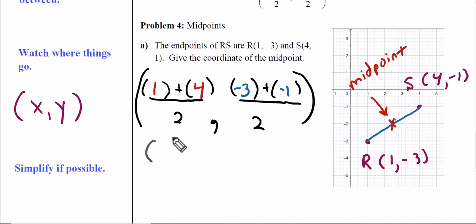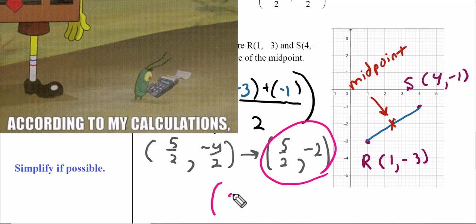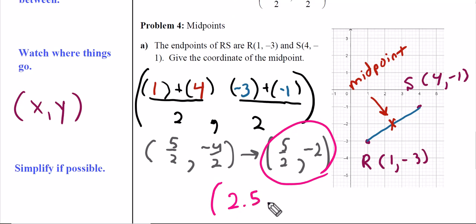If we simplify, we get 5/2 and -4/2, which simplifies to -2. We'll leave 5/2 as a fraction. If you're not sure how to graph 5/2, you could express it as a decimal. Put 5/2 in the calculator and you get 2.5, then -2.